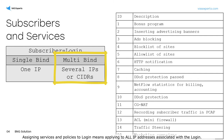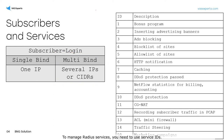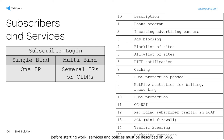Assigning services and policies to a login means applying them to all IP addresses associated with that login. To manage RADIUS services, you need to use service IDs. The required service identifier and profile name should be transmitted. Before starting work, services and policies must be described on BNG.